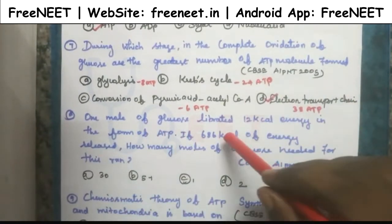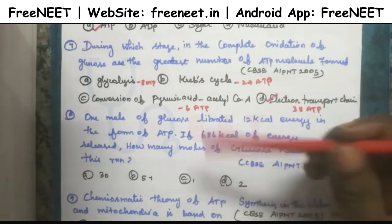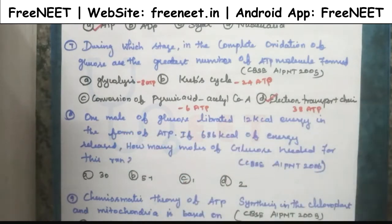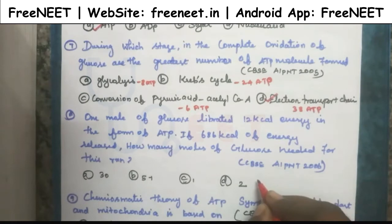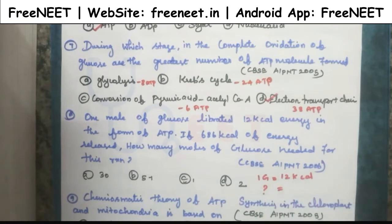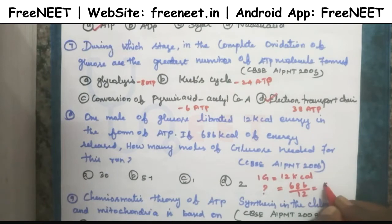Another question: one mole of glucose liberates 12 kilocalories of energy in the form of ATP. If 686 kilocalories of energy is released, how many moles of glucose are needed? We know one glucose molecule liberates 12 kilocalories. So we divide 686 by 12, which gives us 57. The answer is 57 moles of glucose.